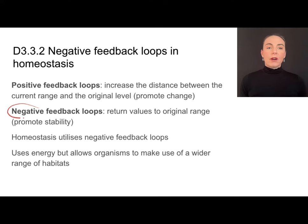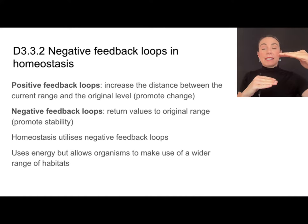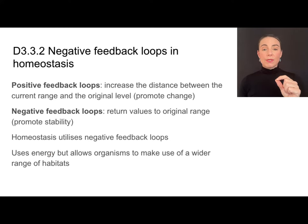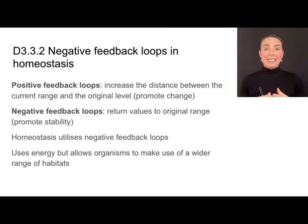Negative feedback loops, however, are the type of feedback loops that we'll be talking mostly about in homeostasis. These are going to promote stability by returning values back to the original range. If one variable goes beyond the acceptable range, mechanisms kick in to bring it back down or back up to that narrow range. All of these processes use energy, but they do allow organisms to utilize a wider range of habitats, keeping their internal environment constant.